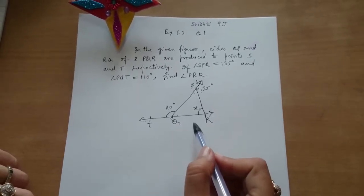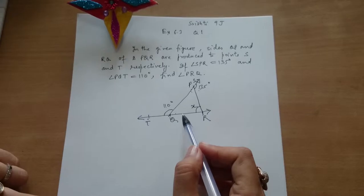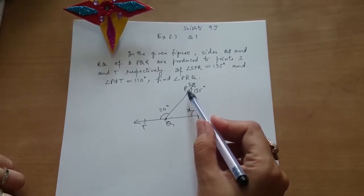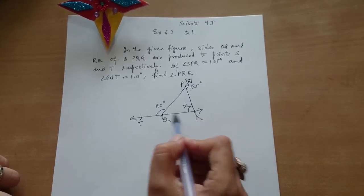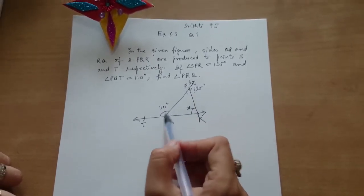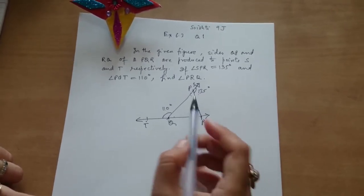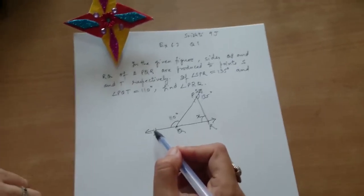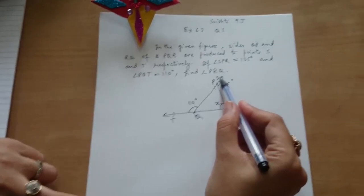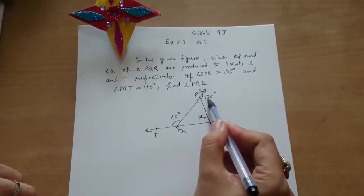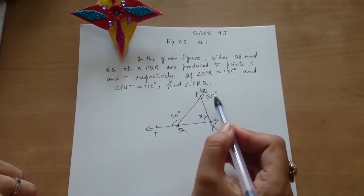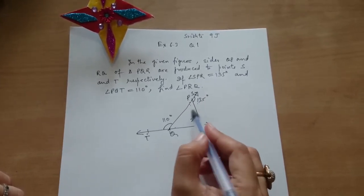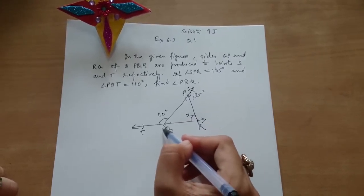Swishti, observe this figure. In the given figure, sides QP and RQ of triangle PQR are produced to points S and T respectively. You are given that angle SPR is 135 degrees and angle PQT is 110 degrees. You have to find angle PRQ.